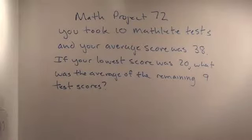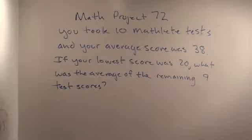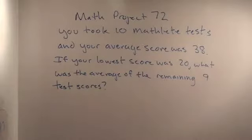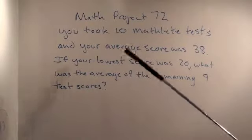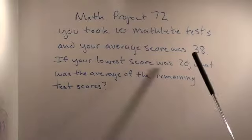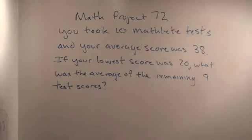By what number? Well, you have a bunch of numbers, you add them up, and then divide by the number of numbers. Divide by the number of numbers. So in this problem, you took 10 tests and the average score was 38. Does that make sense? Yeah.